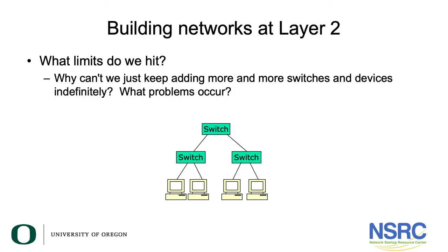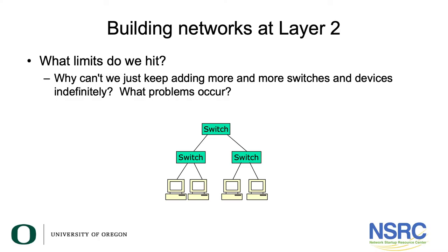So what happens when we build networks at layer two? The nice thing about switches is they are essentially plug-and-play. You can plug a switch into a switch into another switch, power them on, and you will get a layer two network. There isn't actually any configuration required to make the switches work because of the learning mechanism, and any switch that you buy, even an unmanaged switch, will have that learning mechanism built in. So given that it's really easy to build networks at layer two, and lots of people build their networks that way, how far can you go?